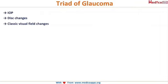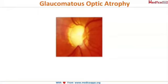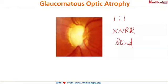From an exam perspective, the triad of open-angle glaucoma is: increased IOP, characteristic disc changes, and characteristic visual field changes — all three are required for diagnosis of primary open-angle glaucoma. The final stage is when the cup-disc ratio becomes 1 to 1, called glaucomatous optic atrophy, where there is no neuro-retinal rim left and the patient is completely blind.